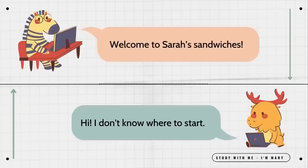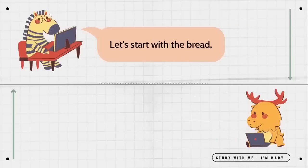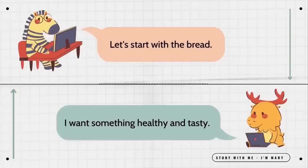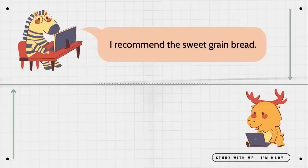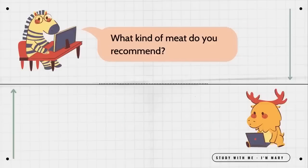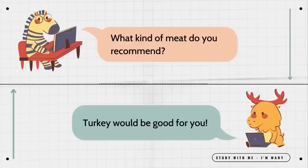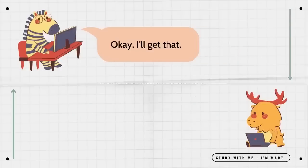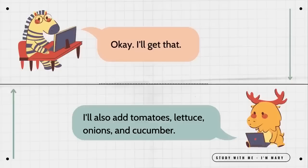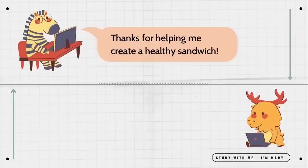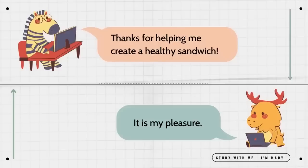Let's start with the bread. I want something healthy and tasty. I recommend the sweet grain bread. Okay. Thank you. What kind of meat do you recommend? Turkey would be good for you. Okay. I'll get that. I'll also add tomatoes, lettuce, onions, and cucumber. Thanks for helping me create a healthy sandwich. It is my pleasure.